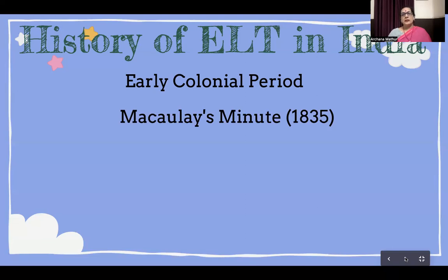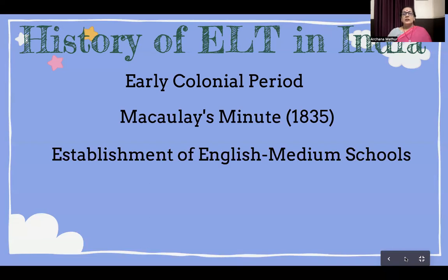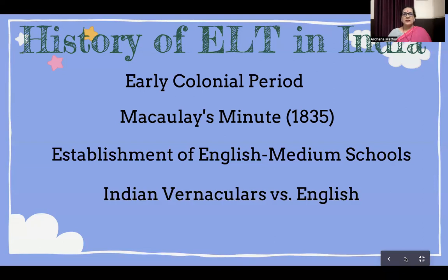Then came Macaulay's Minute in 1835, which said that the medium of instruction in Indian schools should also be English. So it was forced upon our children — suddenly, the medium of instruction changed from regional languages into English. They started establishing English medium schools because they wanted their culture to prevail here, cutting the roots of the traditions and culture of the country. There was stiff resistance because people did not want to give up their own language, but we had to give in. So our own languages became the second language and English became the prime language.